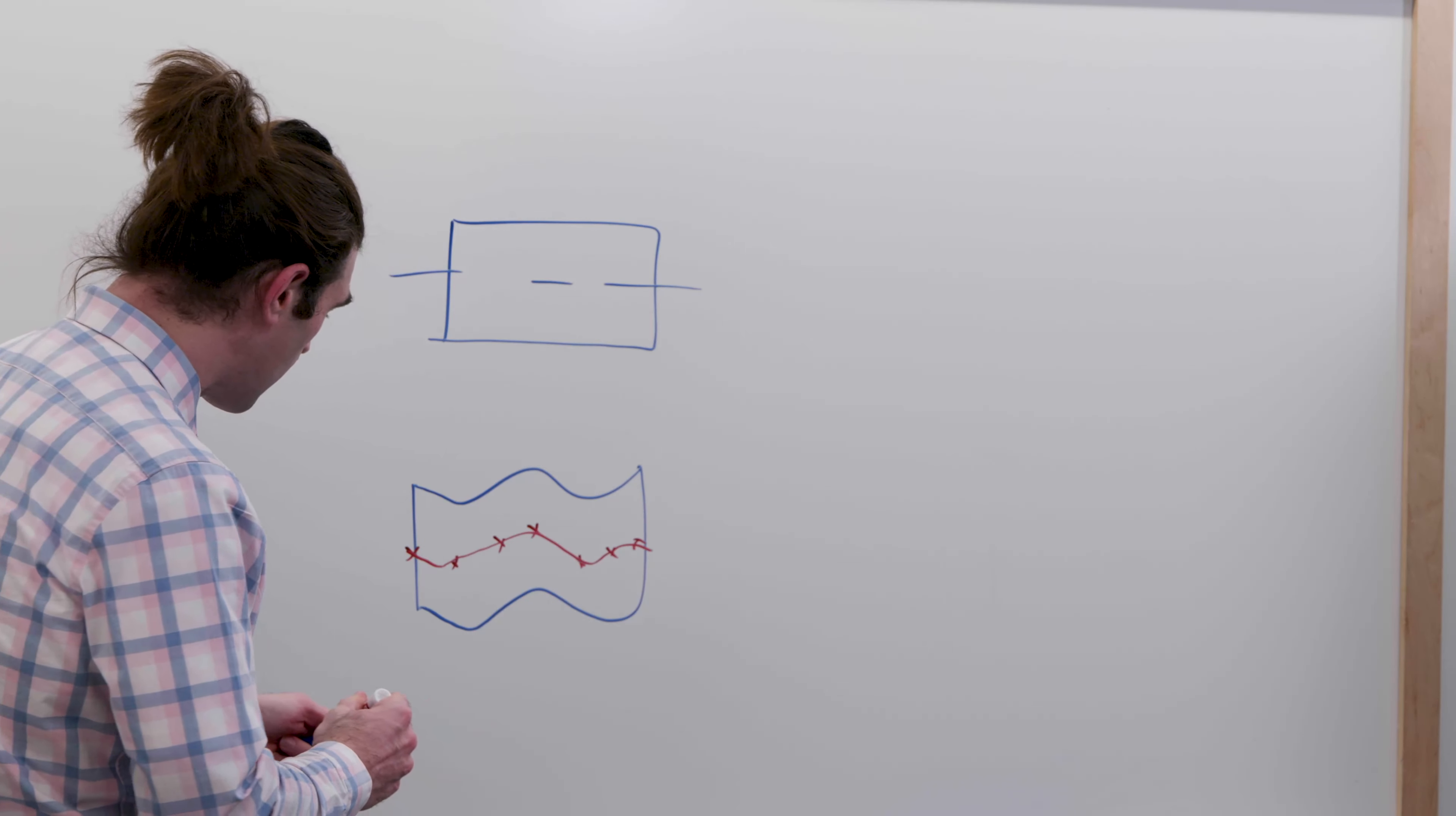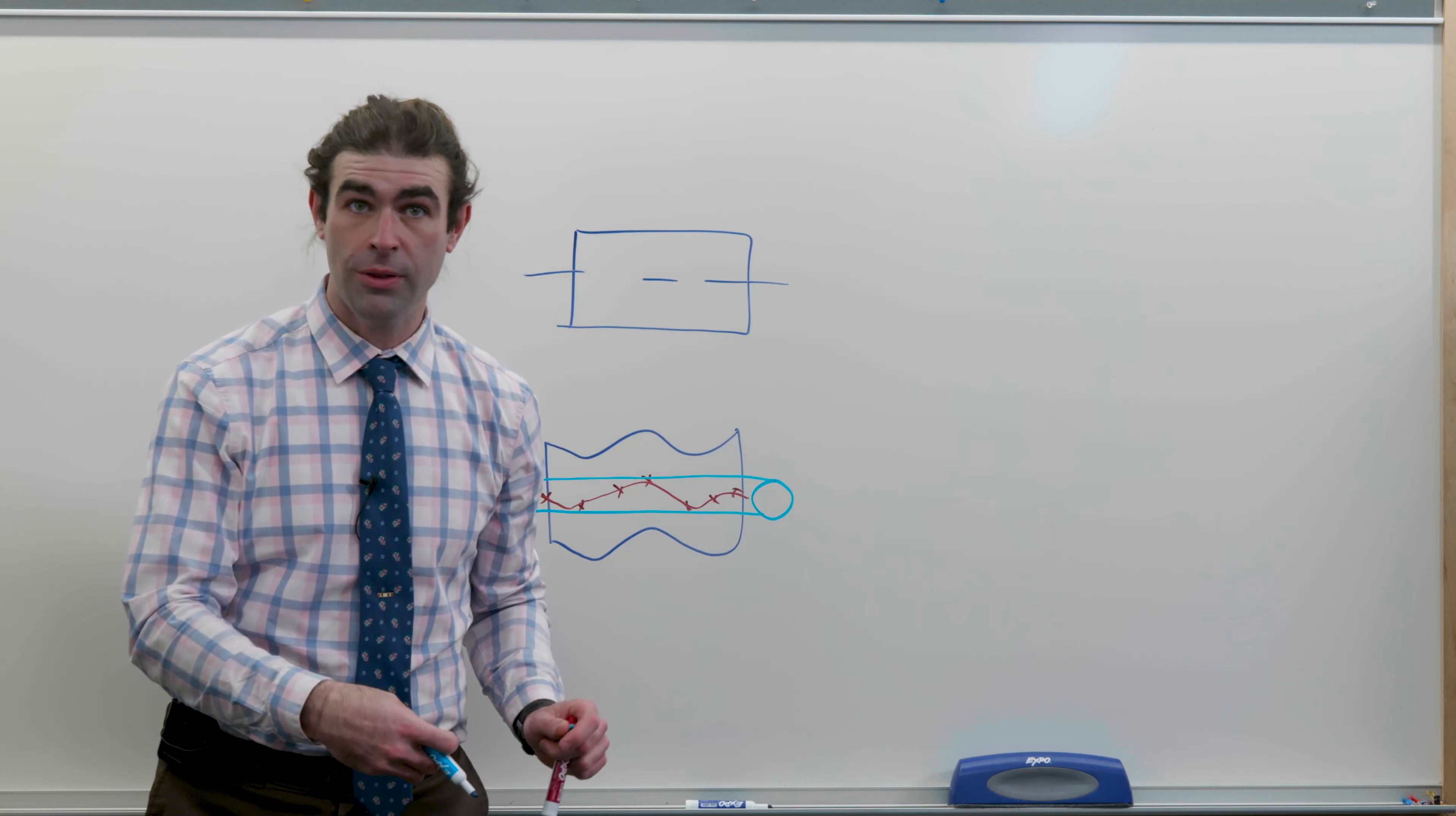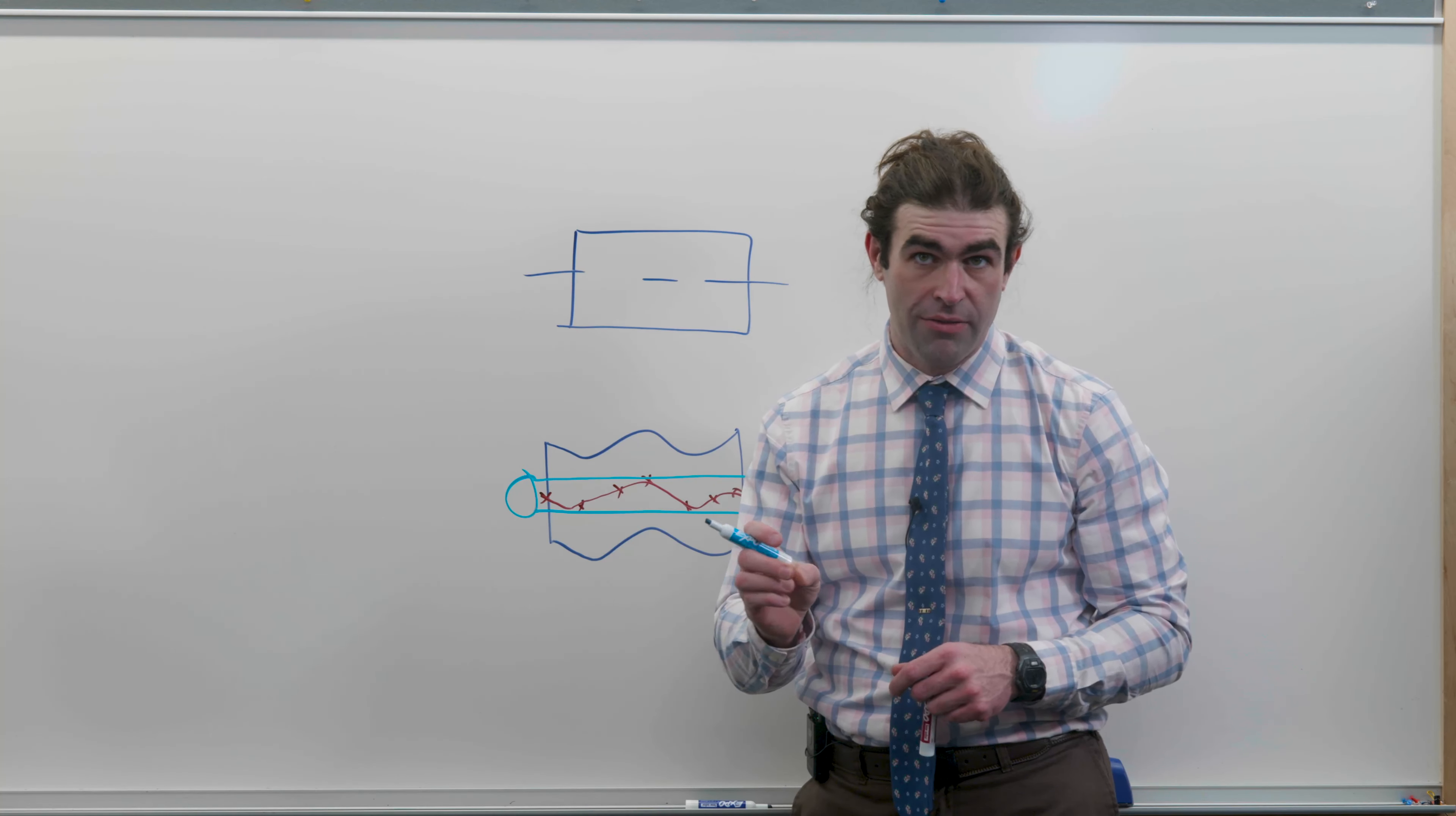Concentricity just says there's this tolerance zone going through the middle of the part, and that derived median line needs to be totally within that tolerance zone. Now, the tricky part, and the thing that makes it different from straightness, is that concentricity requires a datum reference.